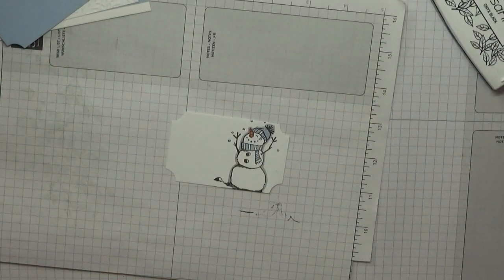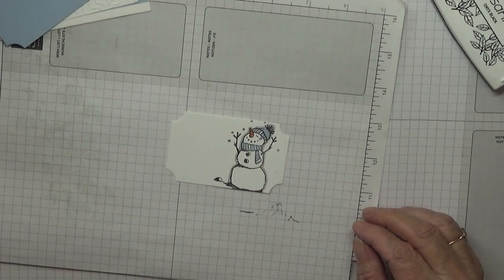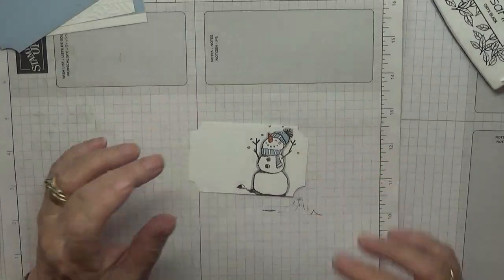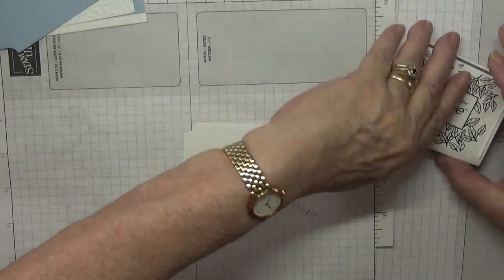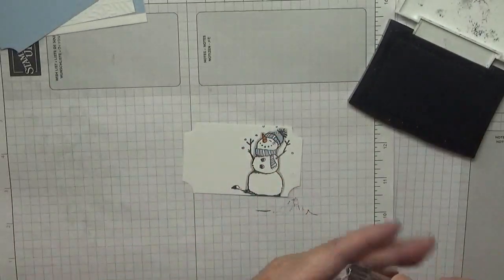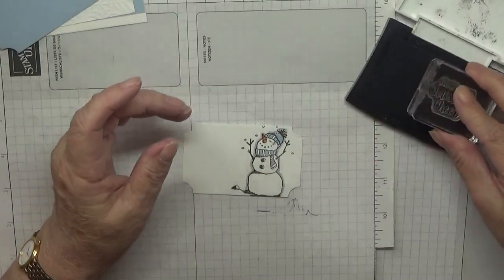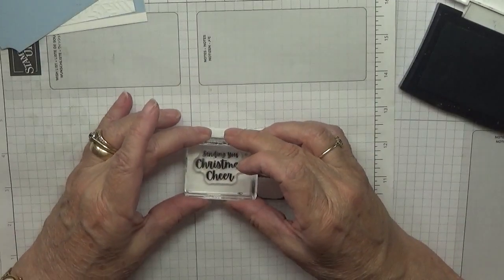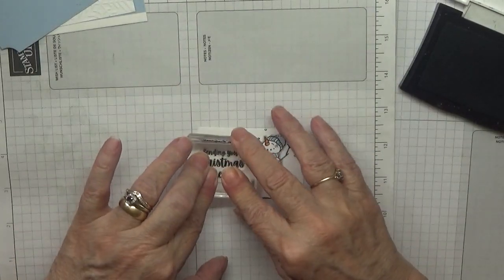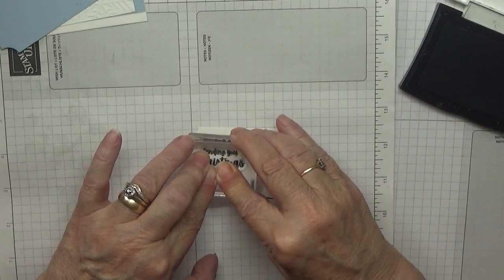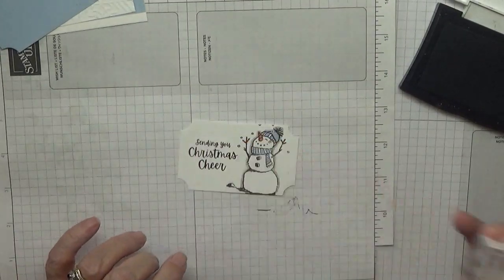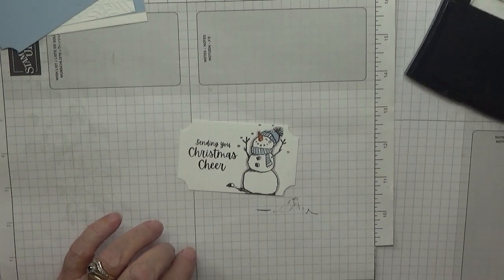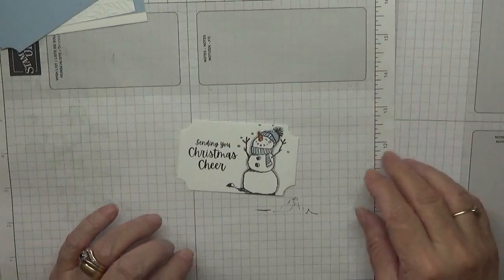Like that. Didn't do it around his arms. And that's all my coloring done, that's all I did. Good. Now for the sentiment. And we just pop that in the middle, 'sending you Christmas cheer.' That is the stamping done.